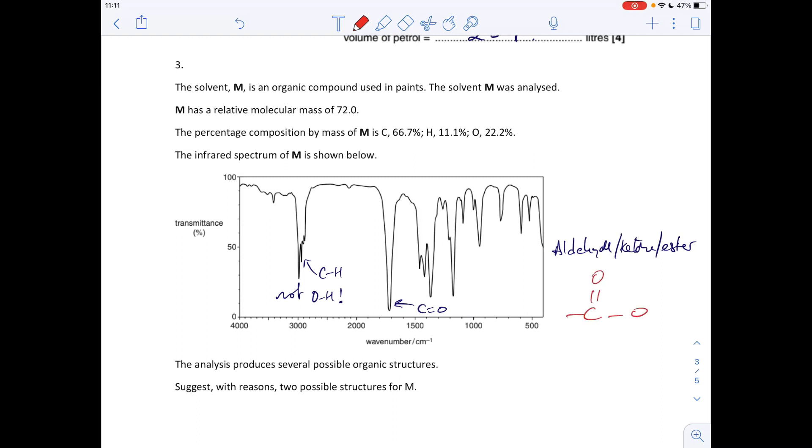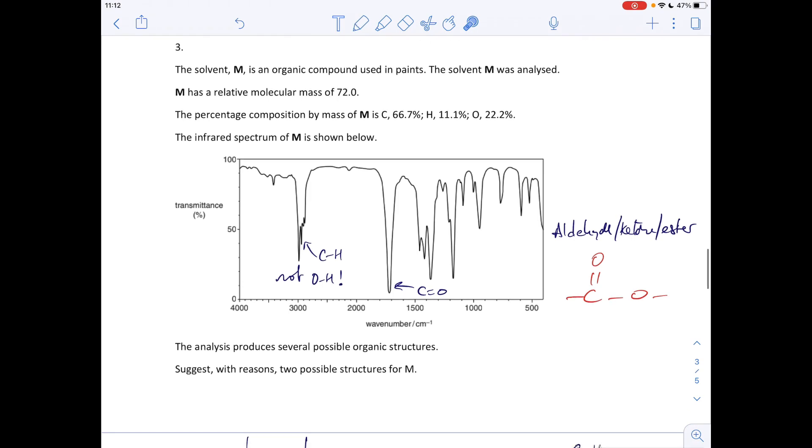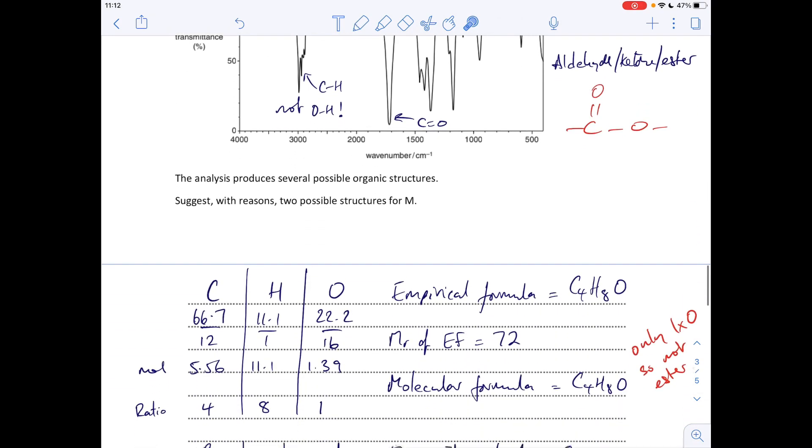Okay, so let's do the empirical formula next. So it's on the next page. So we just do the standard thing, the percentages divided by the relative atomic masses to get the moles, divide by the smallest to get the ratio. So the empirical formula is going to be C4H8O.